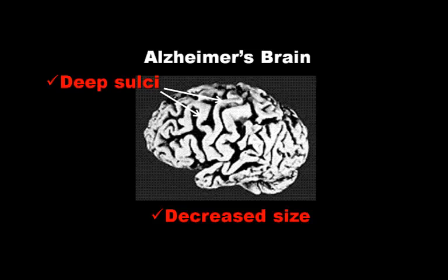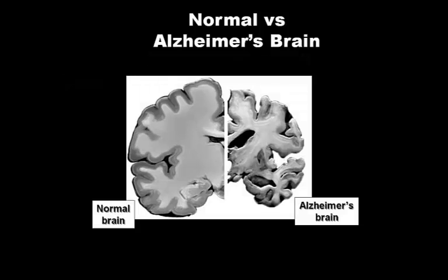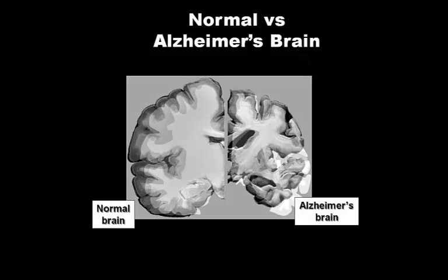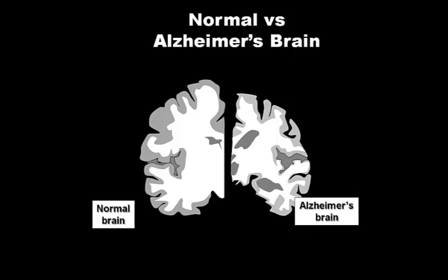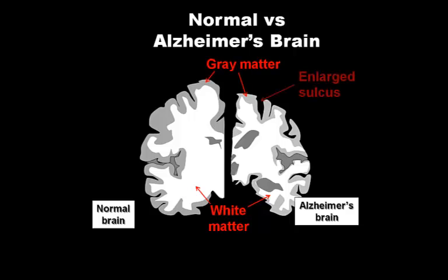If we look at the differences in cross-sections of a normal and Alzheimer's brain, we can learn more about the underlying changes. The smaller Alzheimer's brain shows reduced amounts of both white matter and gray matter. The depths of the sulci are also very evident.